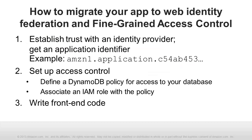Here are the steps for employing Web Identity Federation and fine-grained access control in an application. First, if you have not already done so, register your application with an identity provider. The provider will give you a unique application identifier string. Next, define an access policy for your users. Determine what API actions applications should perform on their behalf and on what database items. Then use the DynamoDB policy wizard to create a policy string that encapsulates that policy. This policy will incorporate your application identifier string.